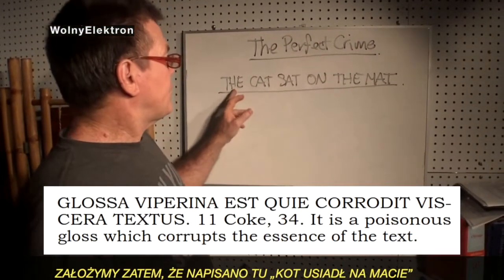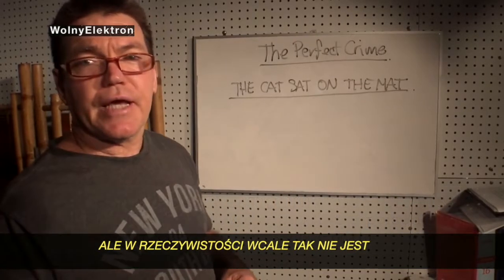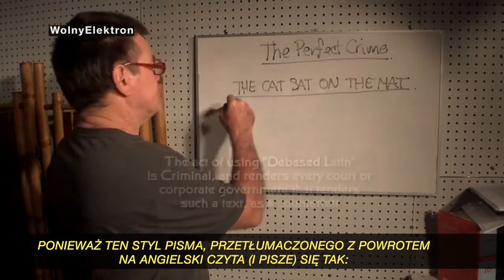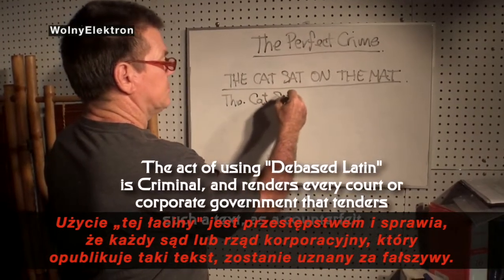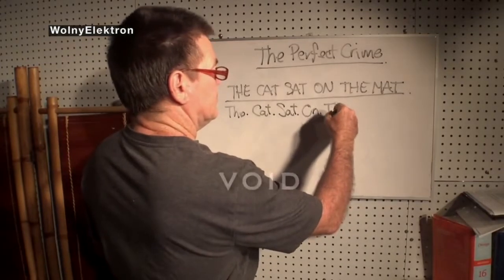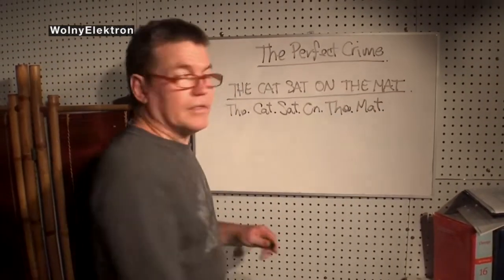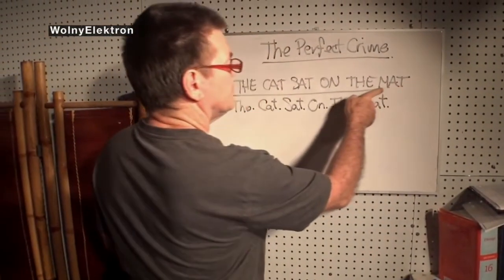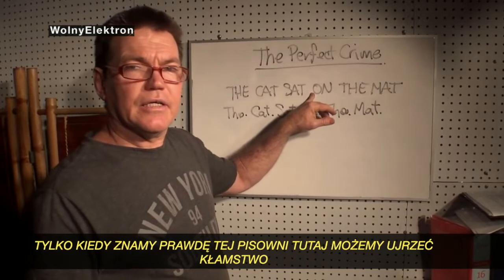Now we would assume that it reads 'the cat sat on the mat.' But in actual fact it doesn't read that at all, because when this typeface is translated back to English, it reads something else entirely. It's only when we know the truth of that text that we can see the lie.